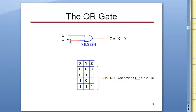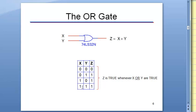The OR gate has a similar design but looks a little different. The 74LS32 is the chip. It's basically the opposite of the AND gate — mom or dad have to say yes for this to work. The OR symbol is a plus sign. So Z is equal to X or Y. If one of them agrees, we're good. If they both agree, obviously we're good.